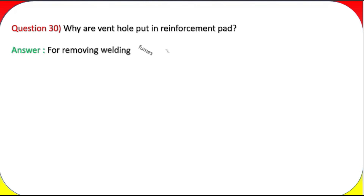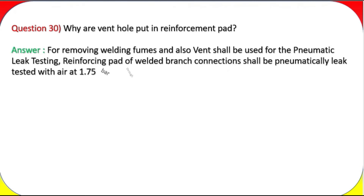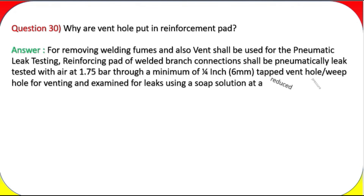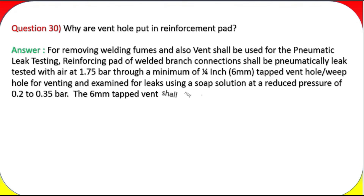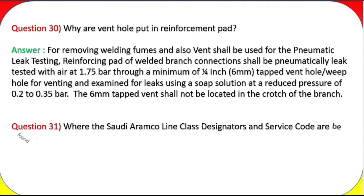Question 30: Why are vent holes put in reinforcement pads? Answer: For removing welding fumes, and also the vent shall be used for pneumatic leak testing. Reinforcing pads of welded branch connections shall be pneumatically leak tested with air at 1.75 bar through a minimum ¼-inch (6 mm) tapped vent/weep hole, examined for leaks using soap solution at a reduced pressure of 0.2 to 0.35 bar. The 6 mm tapped vent shall not be located in the crotch of the branch.